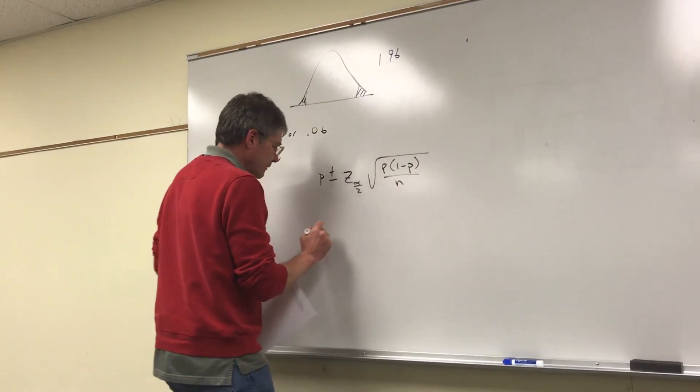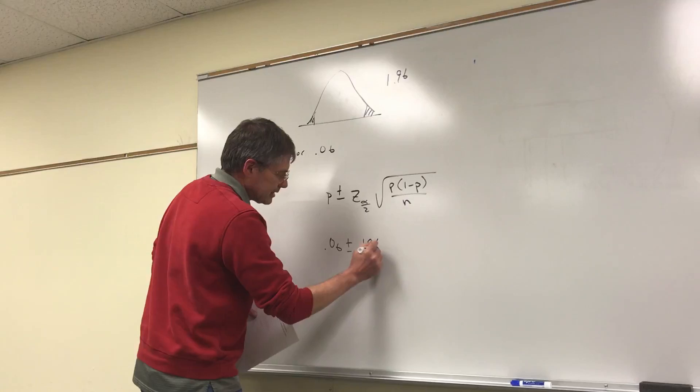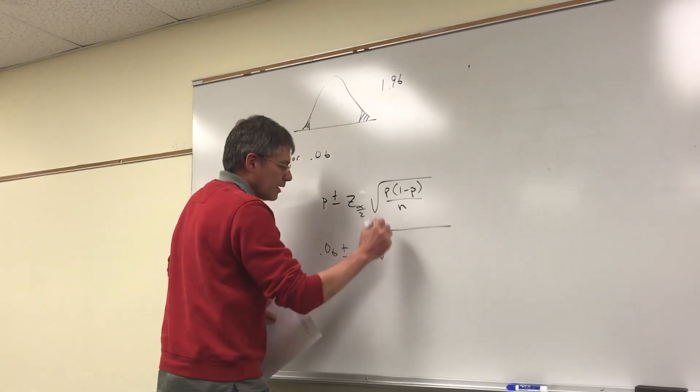So that'd be 0.06 plus or minus 1.96 times the square root of 0.06 times (1 minus 0.06) divided by 100.